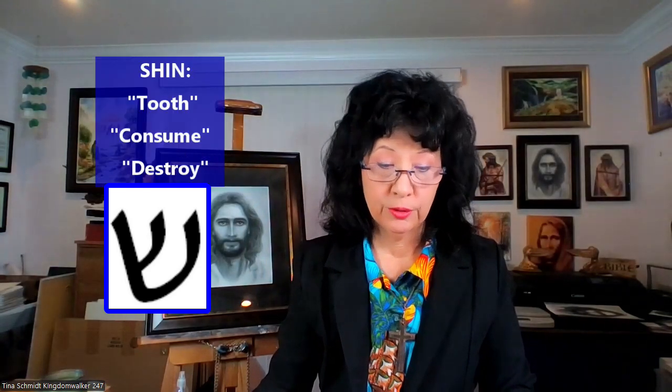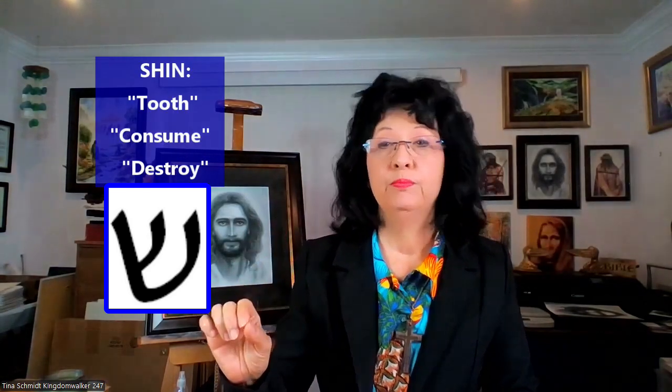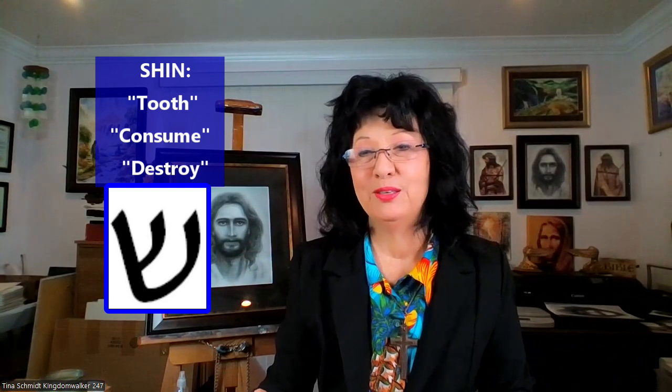The next letter is Shin, the second letter in the name of the Savior. It has a straight line with a little fork that comes off of it. It's called Shin, and it means tooth, consume, or destroy. It's interesting that he would have this in his name, but as you'll see as we move on, it's amazing to have this in the name of the Lord.